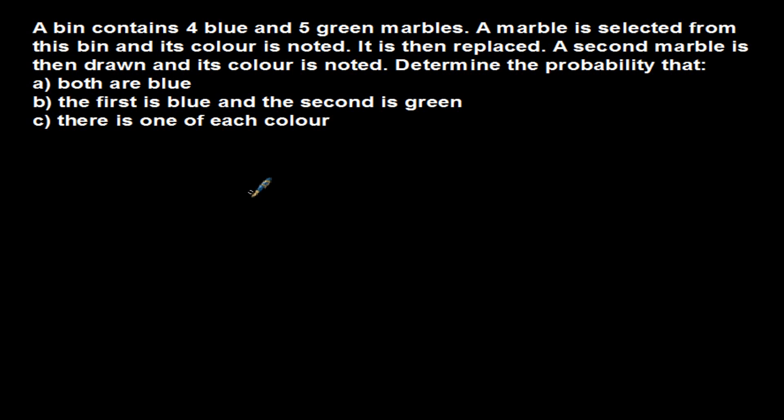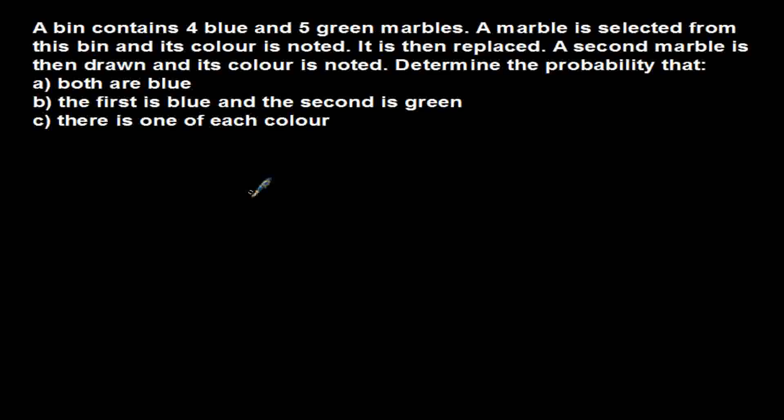Hello, in this video we are talking about probabilities. Our question is: a bin contains 4 blue and 5 green marbles. A marble is selected from this bin and its color is noted, it is then replaced, and a second marble is then drawn and its color is noted.